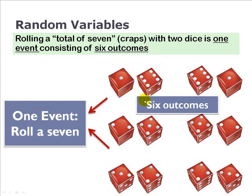See, I can roll a one and a six, a two and a five, a three and a four, a four and a three, a five and a two, a one and a six. There are six different ways for me to roll a seven or craps.